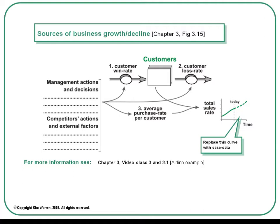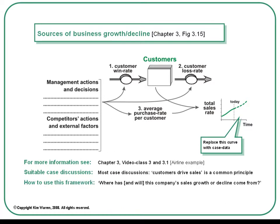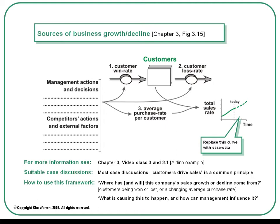The low fare airline industry is used as an example of this framework, and is also used in later chapters to develop a richer picture of the strategy dynamics framework. You'll find this exhibit useful in most cases as well, since customers drive sales for most businesses. You can start this short discussion by replacing the curve on the right with the sales rate for the case you're discussing. Questions to pose include: where has and will this company's sales growth or decline actually come from? Are customers being won or lost, or are they changing the rate at which they're buying? Then you can ask questions about what's causing this to happen and how management can influence it.